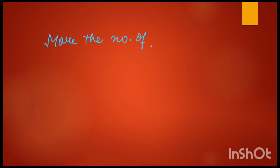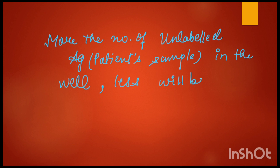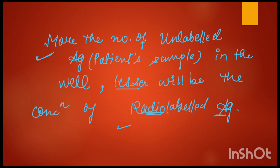From this we understand: more the number of unlabeled antigen, or we can say patient sample in the well, then less will be the percentage or concentration of radio-labeled antigen. The more patient sample unlabeled antigen is present, the less is the amount of radio-labeled antigen, because the sample antigen has higher affinity for the specific antibody.